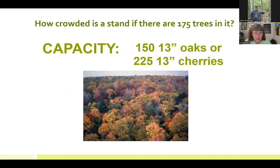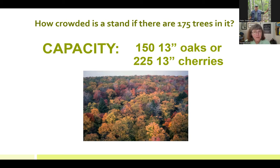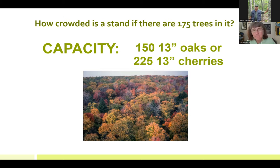Just as with the bus, if I tell you there are 175 trees in a given acre, you need to know something about the species composition of that stand before making a partial cut. It gets really complicated when you have mixes of species with different average maxima all growing together. How do you decide how crowded those stands are? That's where relative density comes in.